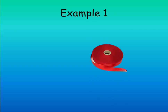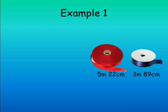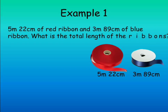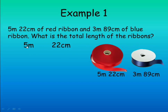Example one: a girl wants to make decorations with ribbons. She bought 5 meters 22 centimeters of red ribbon and 3 meters 89 centimeters of blue ribbon. Let's find the total length of the ribbons. The word 'total' means we should add, so we are going to add 5 meters 22 centimeters and 3 meters 89 centimeters.